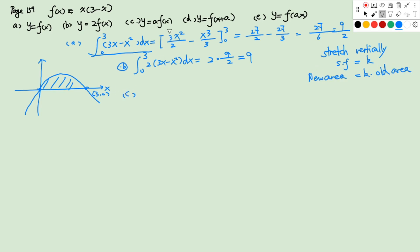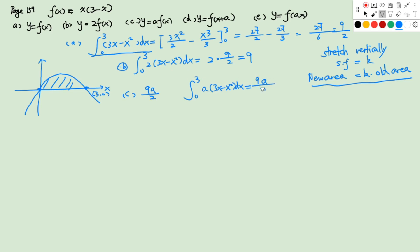For part c, y = a·f(x), which is exactly the same idea. So the area will be 9a/2. Or if you want to verify by calculation, integrate from 0 to 3 of a(3x − x²) dx — taking out a gives 9a/2.